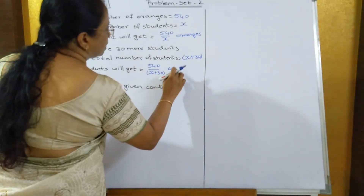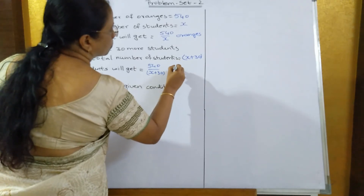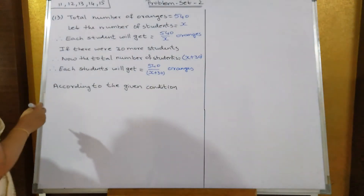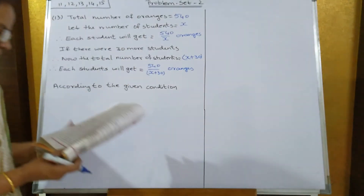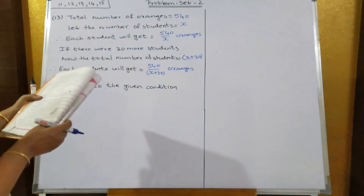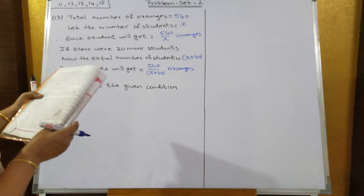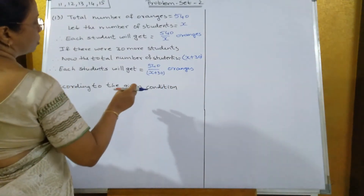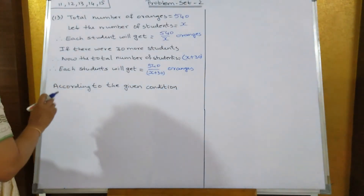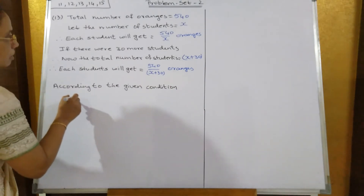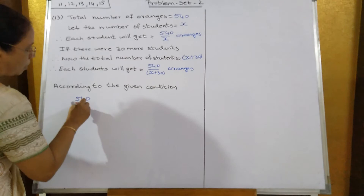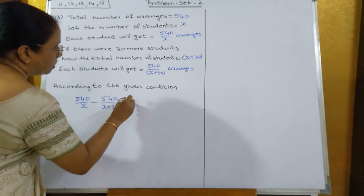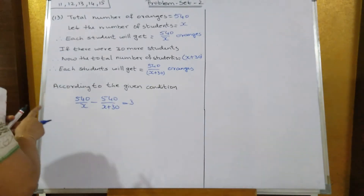According to the given condition, if 30 more students are added, each student would get three oranges less. So the equation becomes: 540 upon x minus 540 upon x plus 30 is equal to 3.